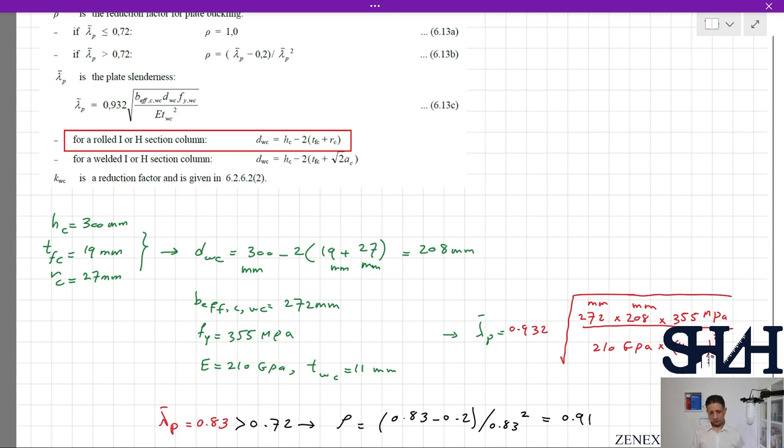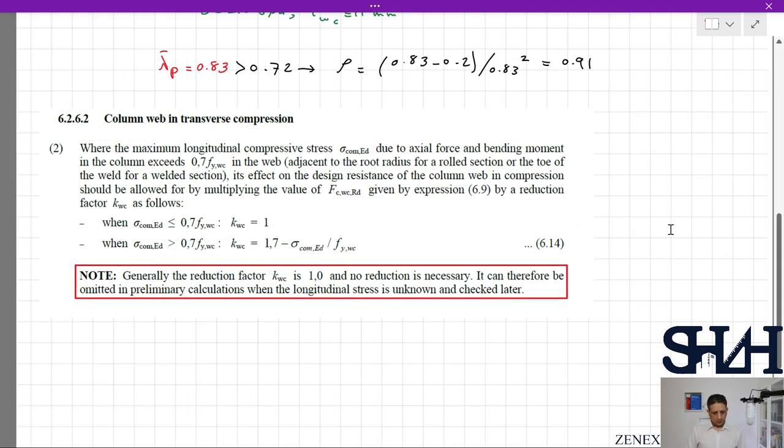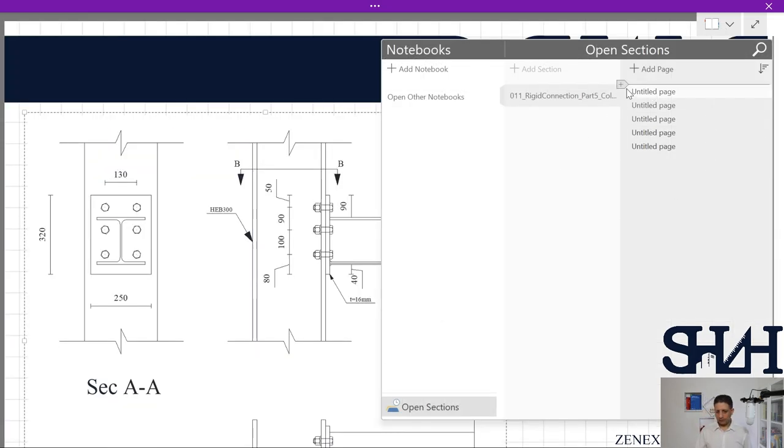Looking at the equation, we have ρ, beff, tw, fy, γM1, and γM0. The only remaining parameter is kwc, which is given in the code in Clause 6.2.6.2, item 2. According to σcom,Ed or maximum longitudinal compressive stress, which we typically do not have in the beginning, the note states: generally the reduction factor is taken as 1. No reduction is necessary. It can be omitted in preliminary calculations when longitudinal stress is unknown and checked later. So we can take kwc as 1.